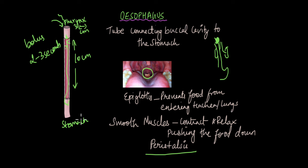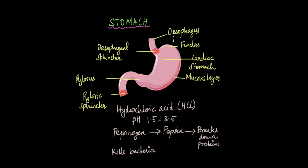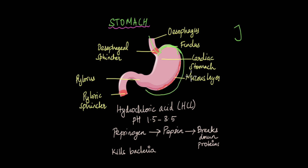So, what happens to the food in the stomach? The stomach is a J-shaped organ situated at the base of the esophagus. At the base of the esophagus is a muscle known as the esophageal sphincter, which controls the amount of food entering the stomach. The rounded portion of the stomach close to the esophagus is known as the fundus, and the broad part is known as the cardiac stomach. The bent, rounded portion is the pylorus or pyloric stomach. The stomach also has a layer of mucus that covers its entirety.